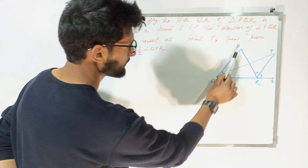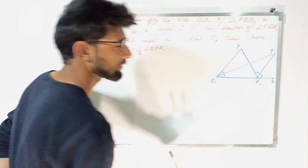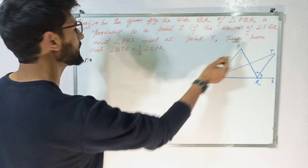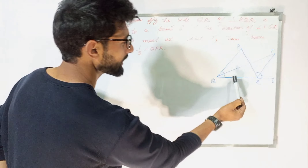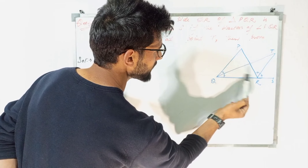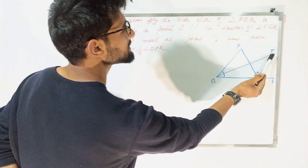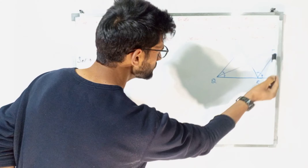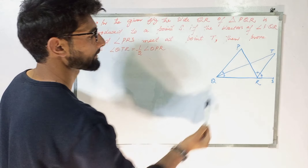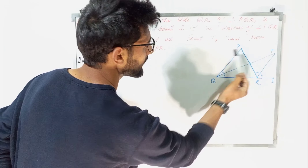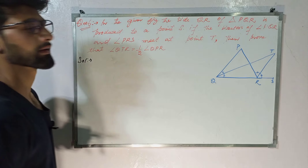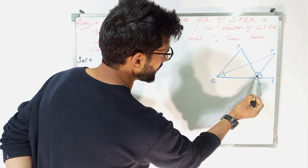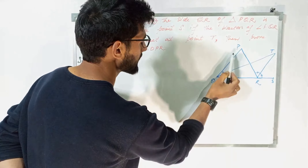In this triangle PQR, the side QR is produced to point S, and this triangle has two angle bisectors of angle PQR and angle PRS meeting at T. This angle is divided into two equal parts, and what we have to prove is that angle QTR is equal to half of angle QPR — that is, this angle is half of angle QPR.